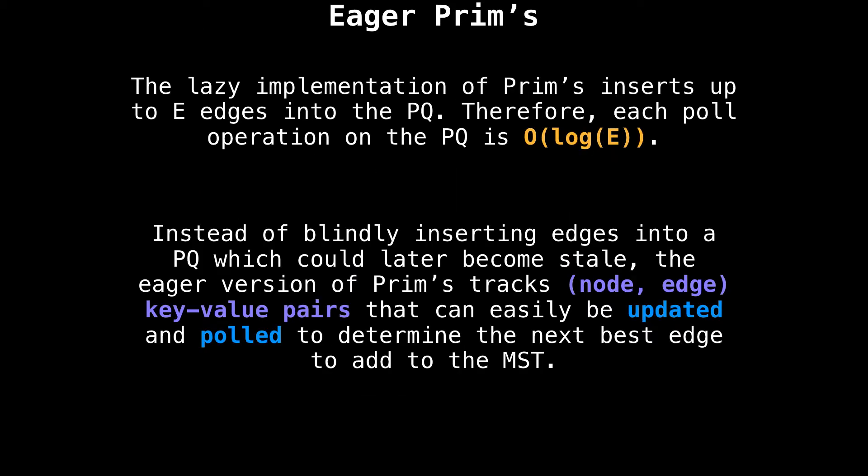The lazy implementation of Prim's inserts E edges into a priority queue, resulting in each poll operation on the priority queue being O(log E). In the eager version, we maintain the idea that instead of adding edges to the priority queue — which can later become stale — we should track node-edge key-value pairs that can easily be updated and pulled to determine the next best edge to add to the minimum spanning tree.